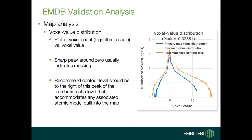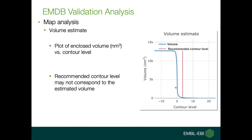If two half maps are provided, we give both curves in the same plot. The blue curve is for the primary map and the orange curve for the raw map. The second metric is the volume estimate. This plot shows how the enclosed volume varies with the contour level. The specified contour level is shown as a vertical line, and its intersection with the curve gives the enclosed surface at the given threshold. The contour level provided by the author may not correspond to the estimated volume, so sometimes those three lines may not intersect at the same point.